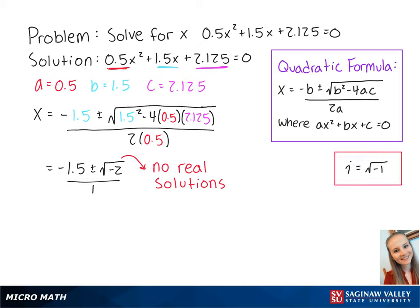we can use i to solve for a complex solution. So we can rewrite this as negative 1.5 plus or minus the square root of negative 1 times the square root of 2, which is equal to negative 1.5 plus or minus the square root of 2i. So x equals negative 1.5 plus the square root of 2i or negative 1.5 minus the square root of 2i. This is the final answer.